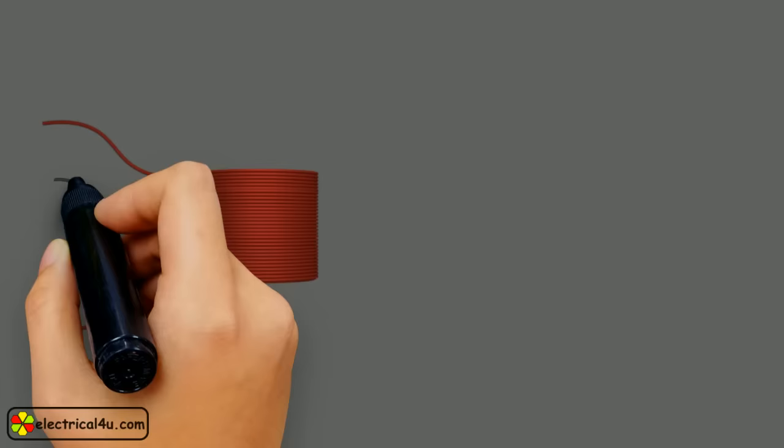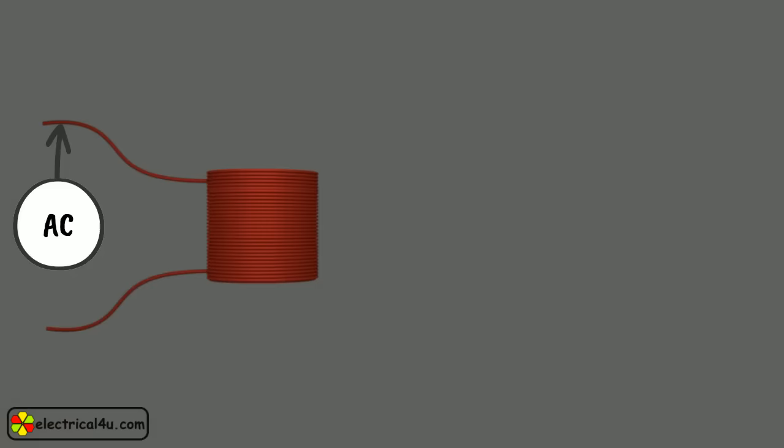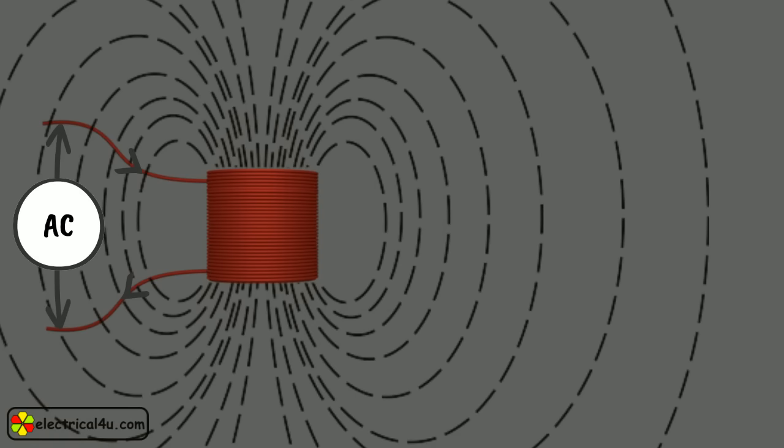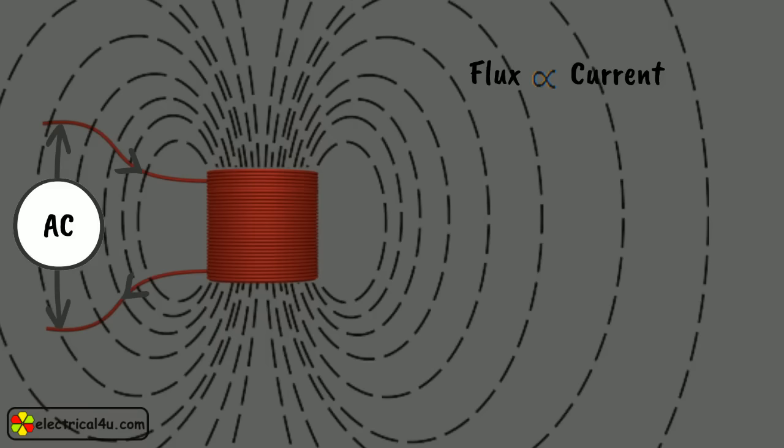When an alternating current is allowed to flow through any of the windings, there will be an alternating flux produced surrounding the winding. The magnitude of this flux is proportional to the magnitude of the current flowing through the winding. The direction of the flux is according to the direction of current.